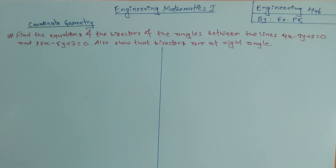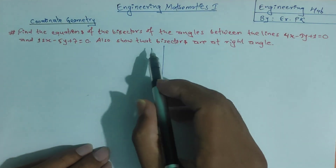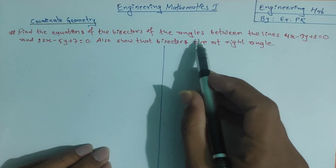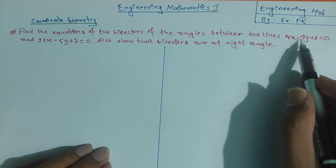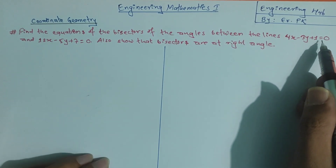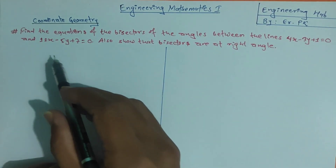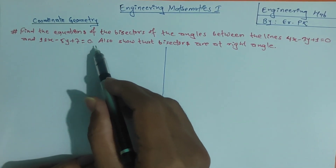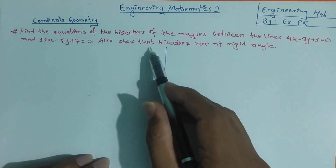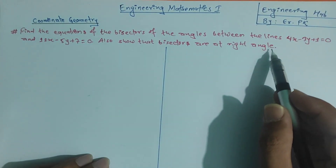Welcome to my channel Engineering Hub. In this video, I am going to solve a coordinate geometry problem. Find the equation of the bisectors of the angles between the lines 4x minus 3y plus 1 equal to 0, and 12x minus 5y plus 7 equal to 0. Also show that the bisectors are at right angles.